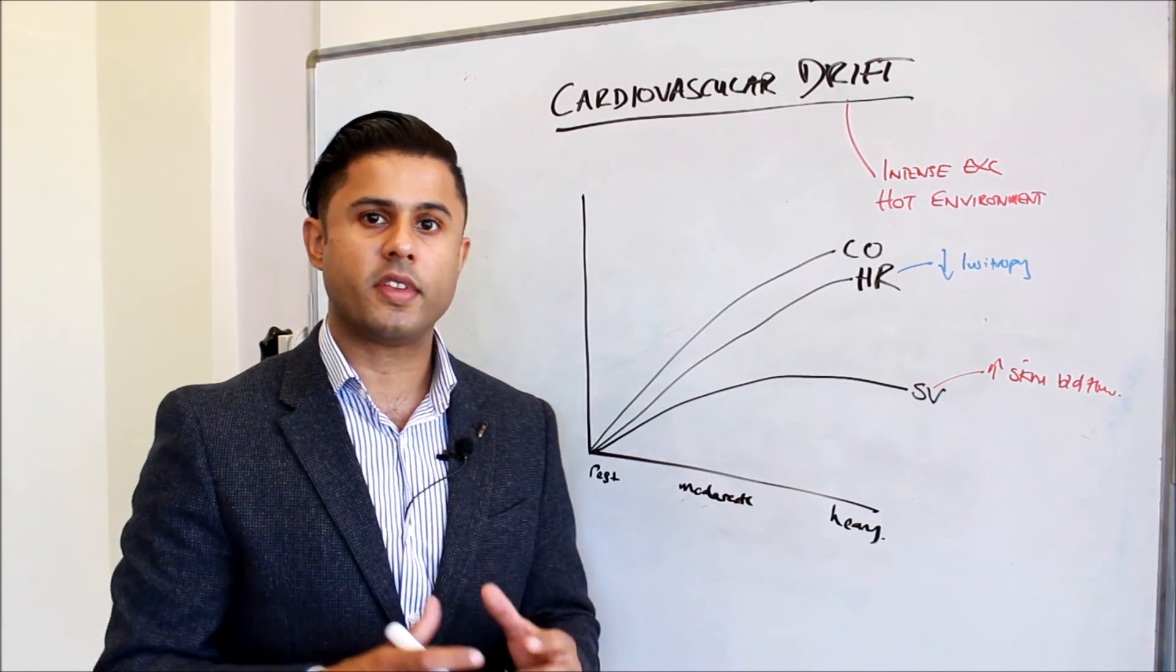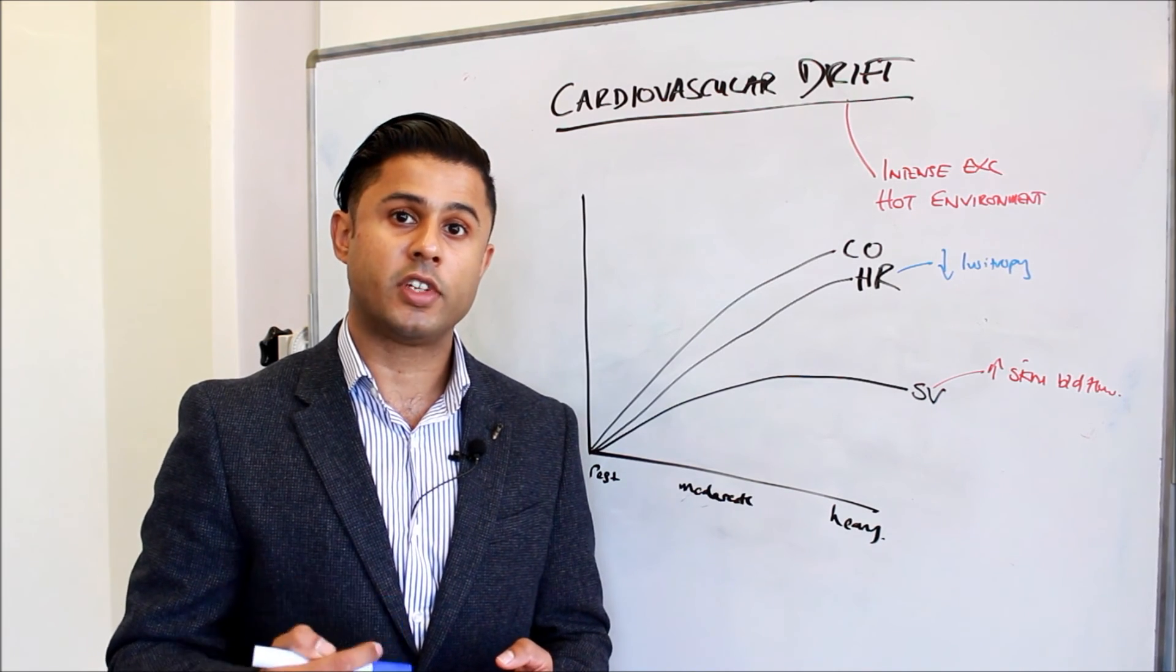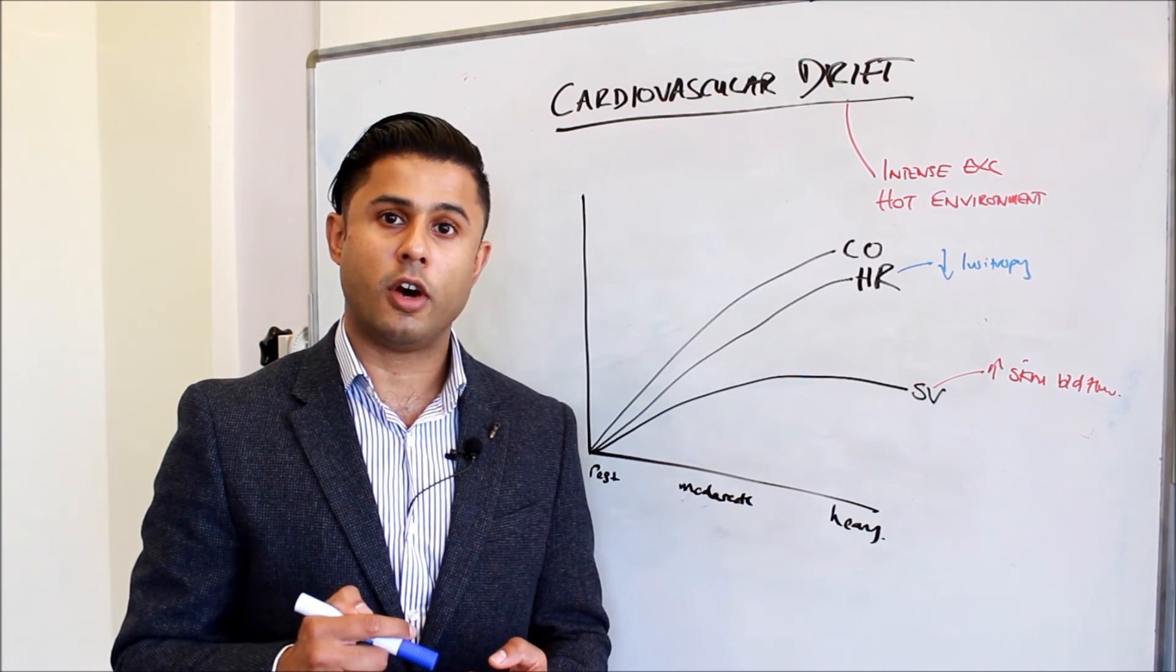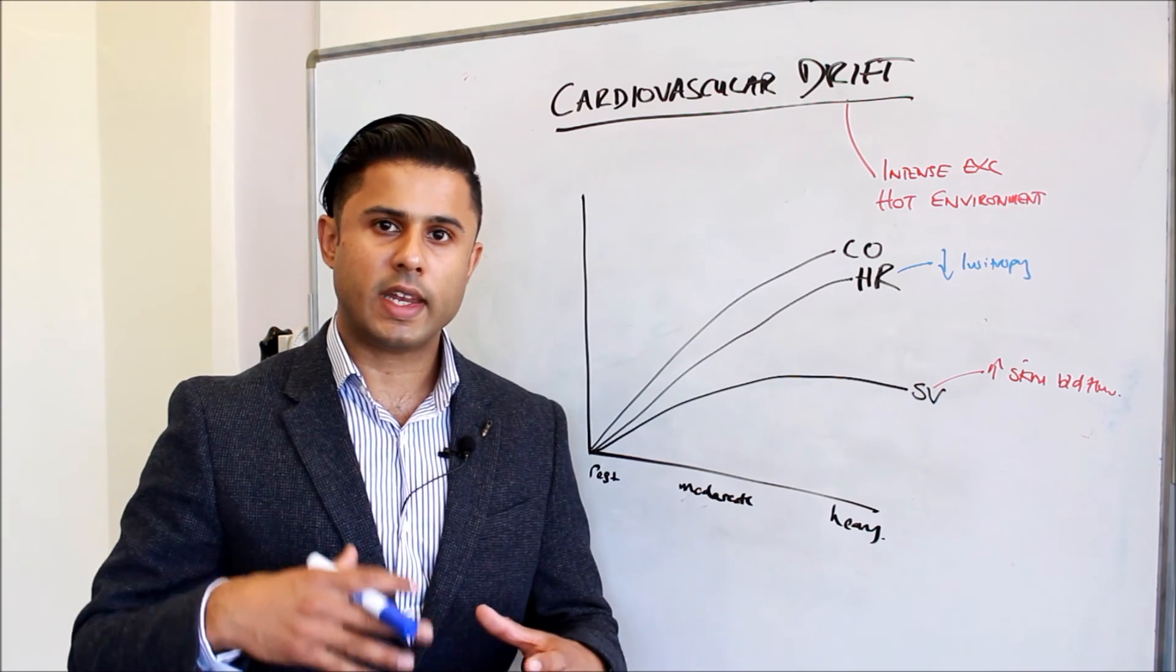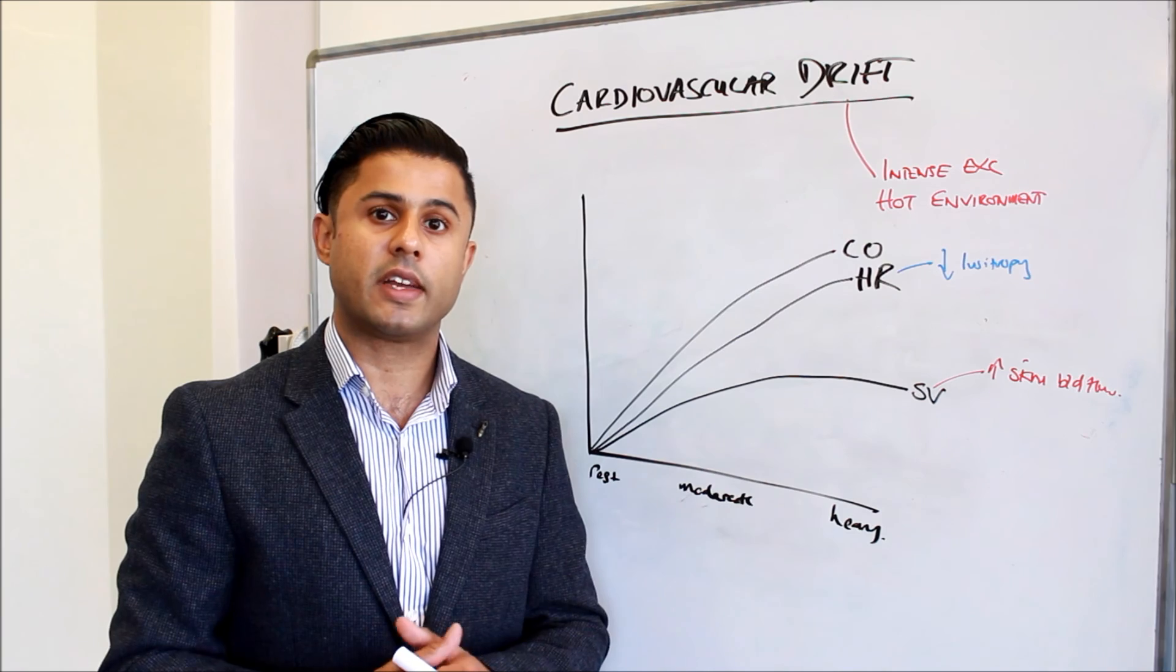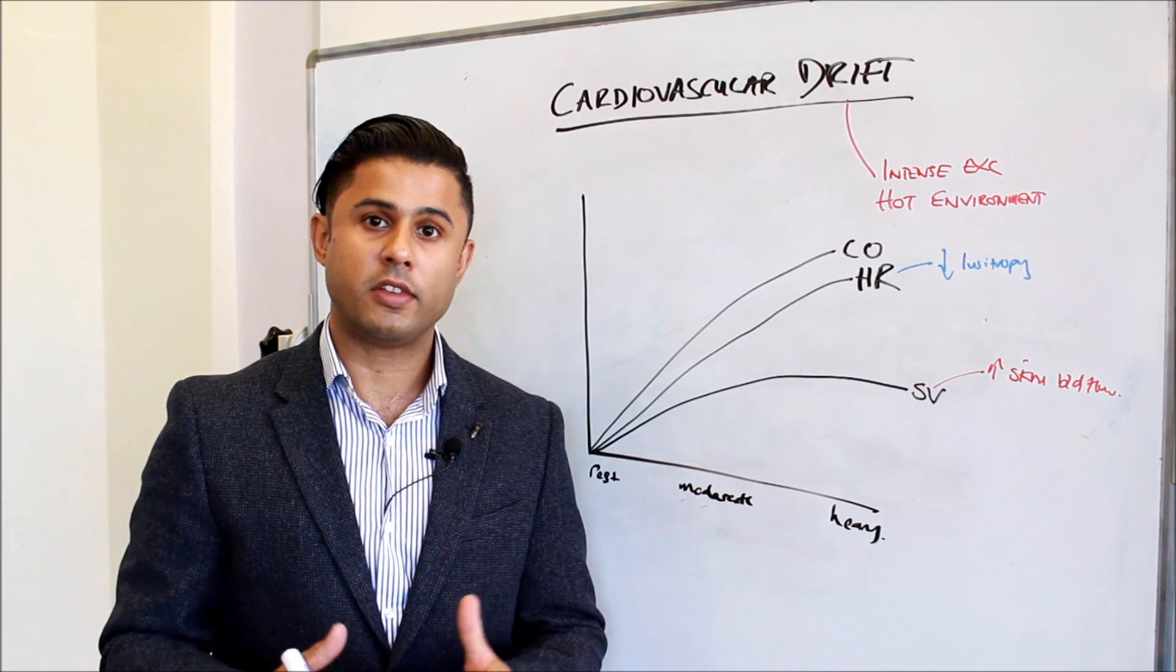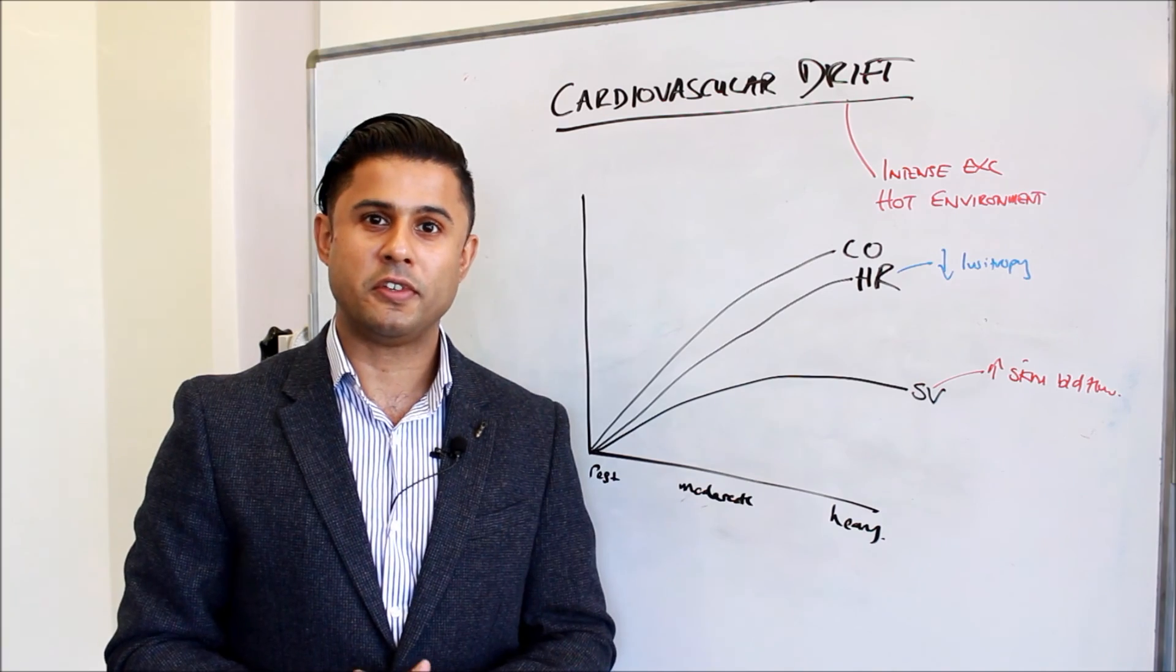These are some things for you to think about next time you go for a run. Think about MMAH: mechanical, metabolic, autonomic, humoral. Try and get these mechanisms related to the sensations that you're feeling as you're actually exercising. Thank you very much for your time. I hope you found the video useful and I'll see you soon.